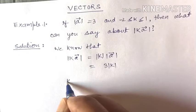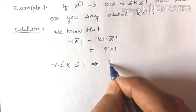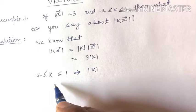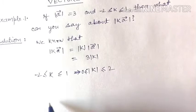k is more than or equal to minus 2 but less than or equal to 1. Then mod of k is more than or equal to 0 but less than or equal to 2.